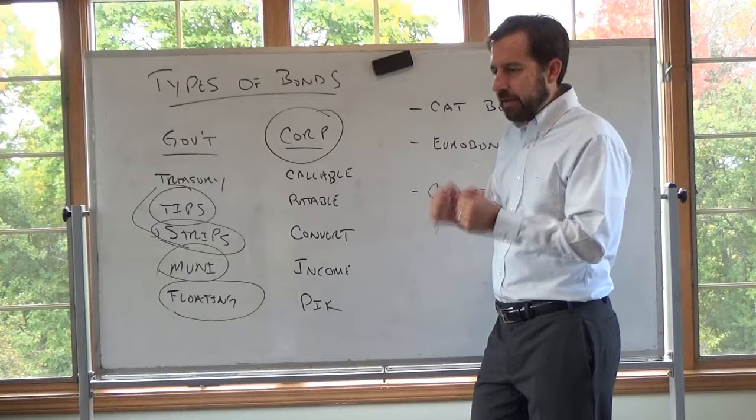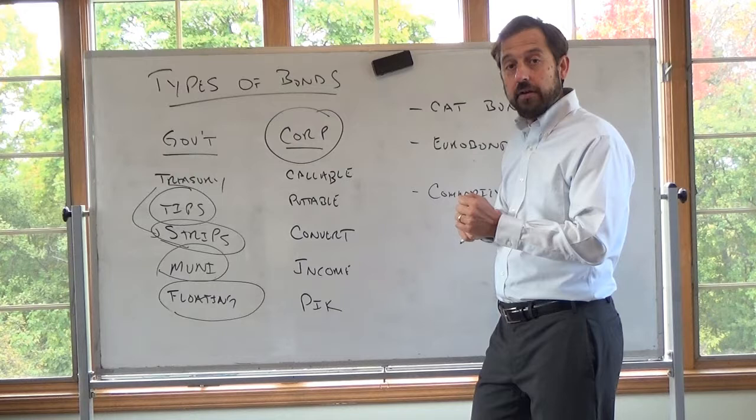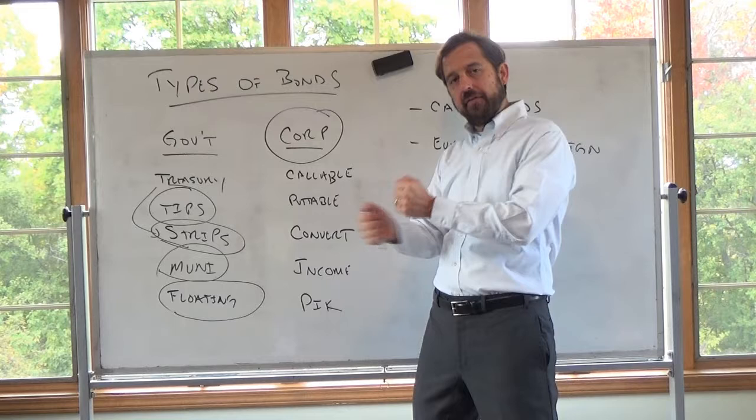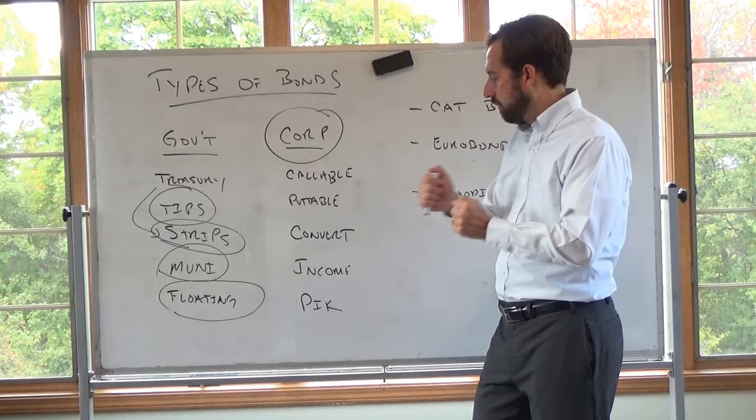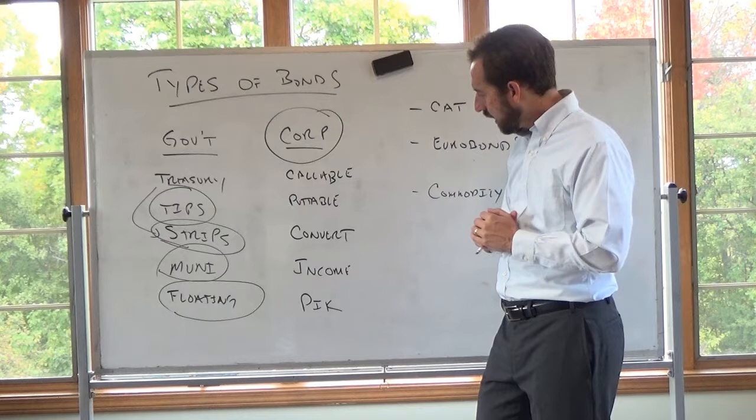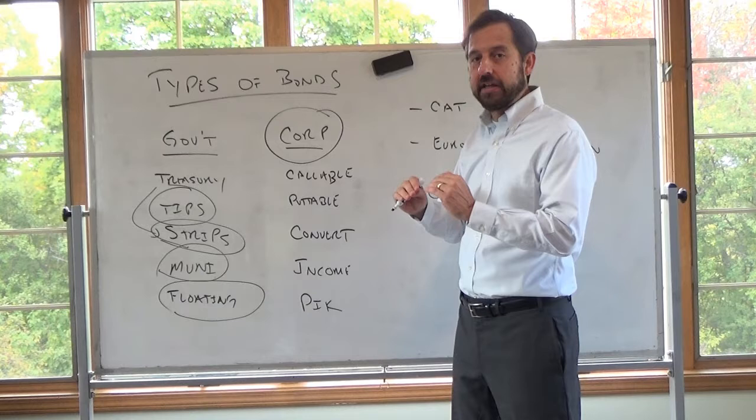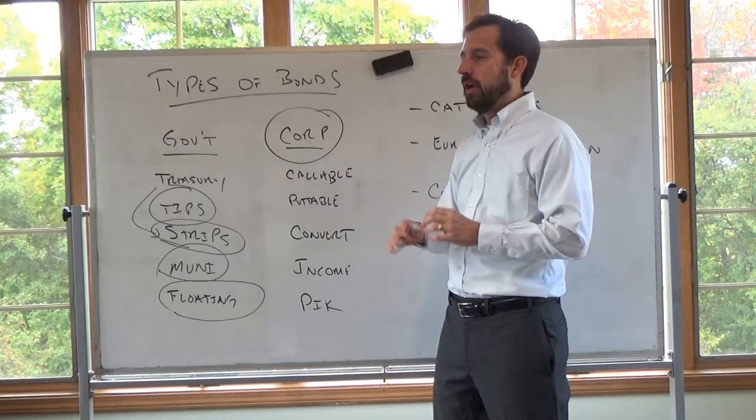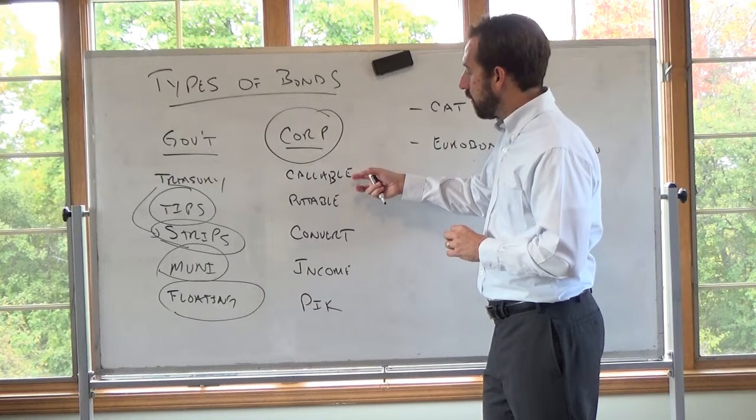We can also have convertibles. So these convertible bonds, it's a bond, it pays a particular coupon rate, but if you would like, you can convert it to this number of shares of stock. So this is kind of like a bond in a call option, but the bond, like if you convert it, you no longer have the bond. So these are interesting. What's going on here is the convertible will tend to have a lower yield than a corporate bond without the convertible feature. So it's a way to get a lower yield by giving the bond holder some equity exposure.